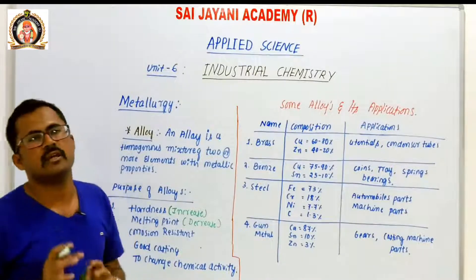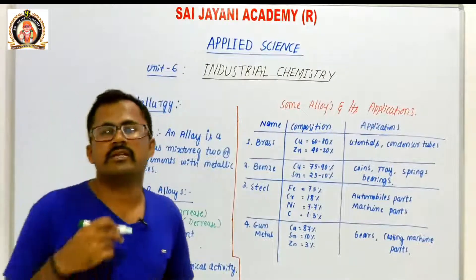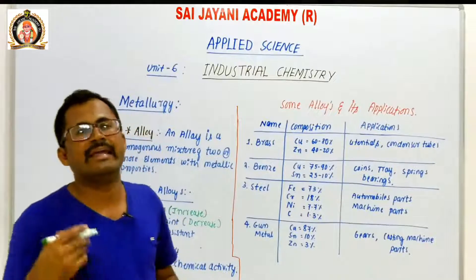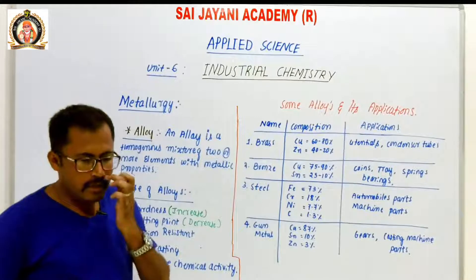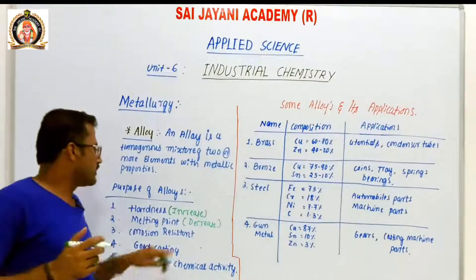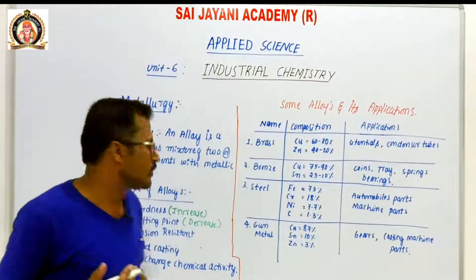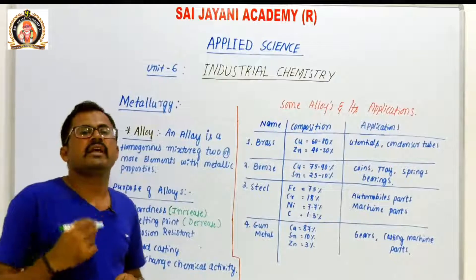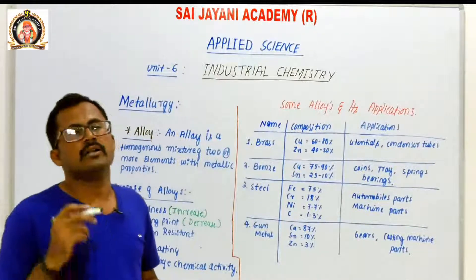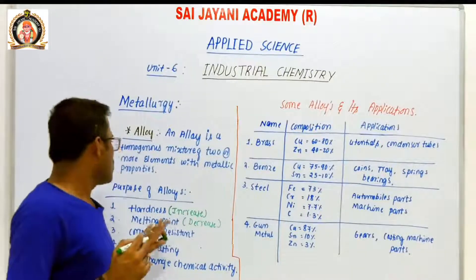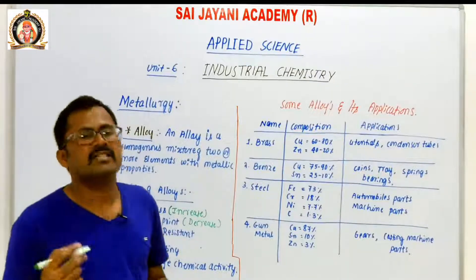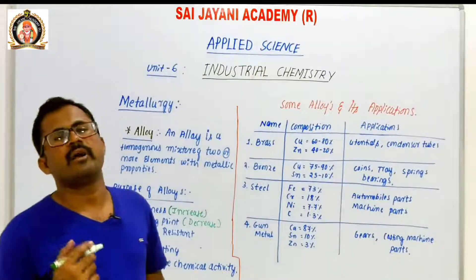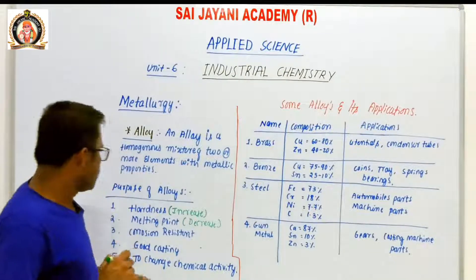The purposes of alloys are: to increase hardness — adding another metal increases hardness and toughness; to decrease melting point — a lower melting point makes the metal easier to use; to provide corrosion resistance — protecting the metal from atmospheric or climate effects; to enable good casting — casting is a manufacturing method made easier with alloys; and to change chemical activity.